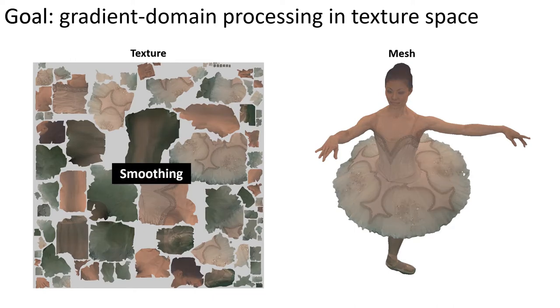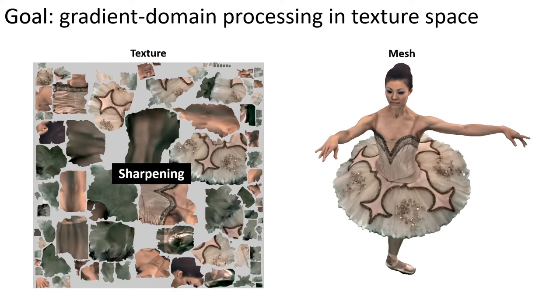For instance, dampening gradients allows us to smooth texture detail, and amplifying gradients allows us to sharpen it.